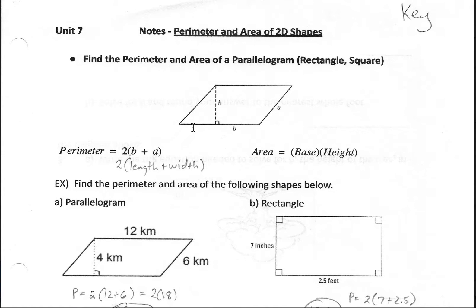The area is going to be our base length, or that length over here, that side B, times our height. Notice that the height is not the same as side A. Side A is a diagonal sort of length, a little bit longer than the height here.